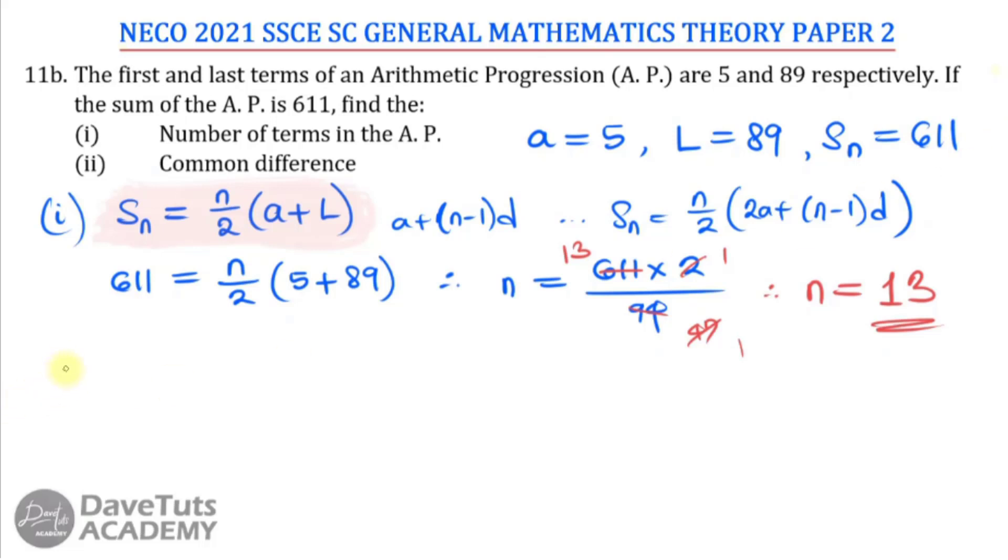In the second case, we also find the common difference. Since for this particular equation we have been given the last term, we can say TN is equal to, generally by our reasoning of equation, it is A plus N minus 1 times D. Now in this particular term, we want to take the 13th term. The last term will have to be the 13th term. So here we can say that T13, what we were given as T13 is 89. Then A, we were given 5. We just got our N to be 13, and then D is what we are looking for.